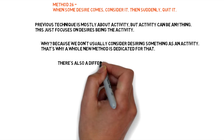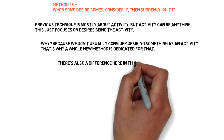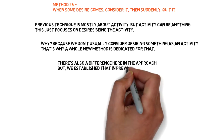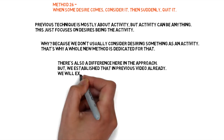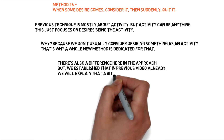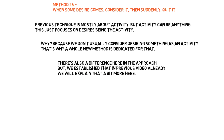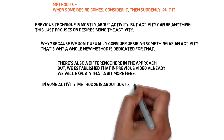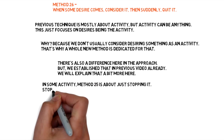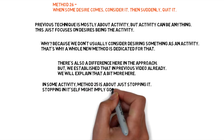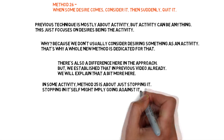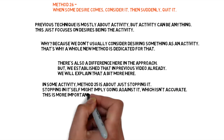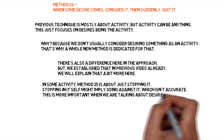There's also a difference here in the approach, but we established that in the previous video already. We will explain that a bit more here. In some activity, Method 25 is about just stopping it. Stopping in itself might imply going against it, which is inaccurate. This is more important when we are talking about desires.